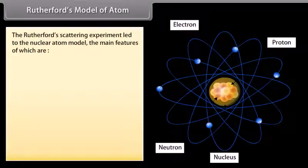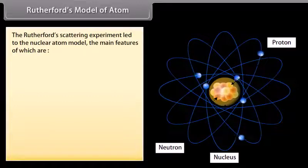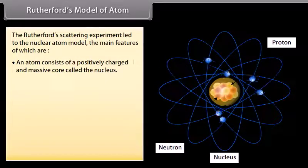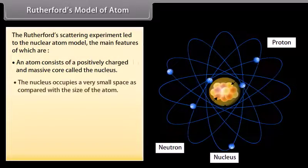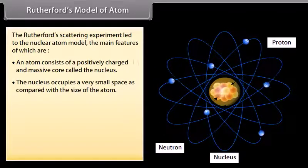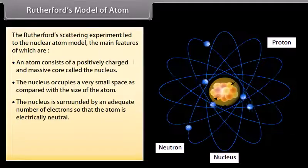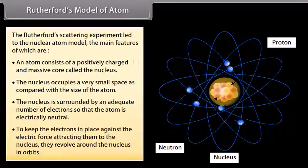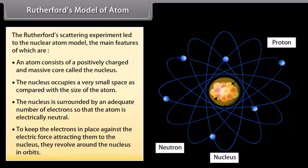Rutherford's scattering experiment led to the nuclear atom model. Its main features are: an atom consists of a positively charged and massive core called the nucleus; the nucleus occupies a very small space compared with the size of the atom; the nucleus is surrounded by an adequate number of electrons so that the atom is electrically neutral; and to keep the electrons in place against the electric force attracting them to the nucleus, they revolve around the nucleus in orbits.